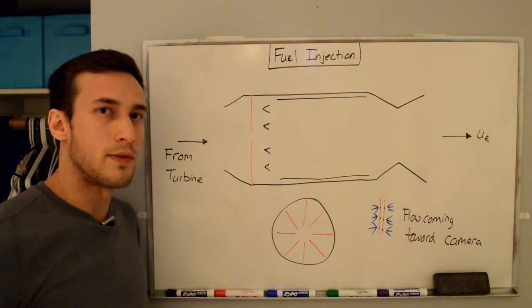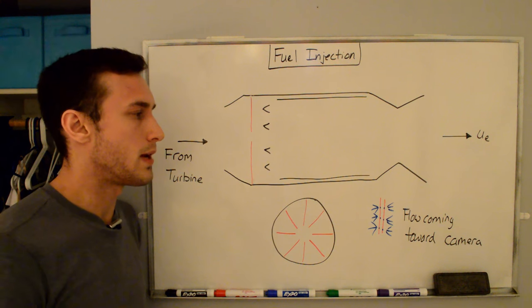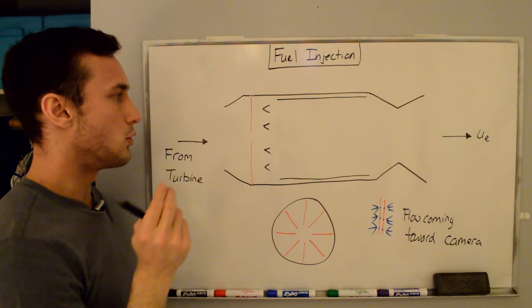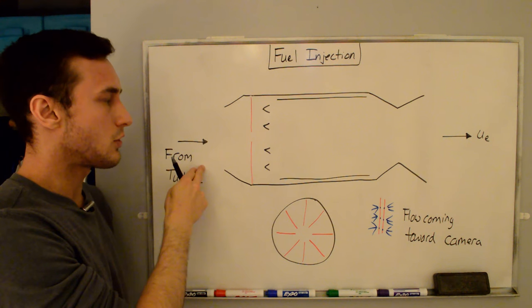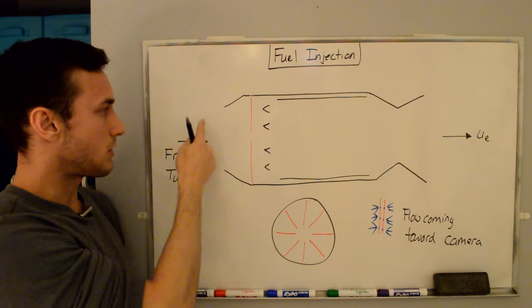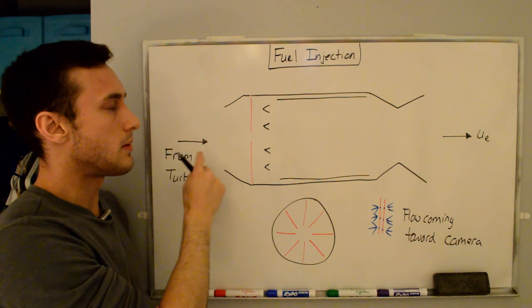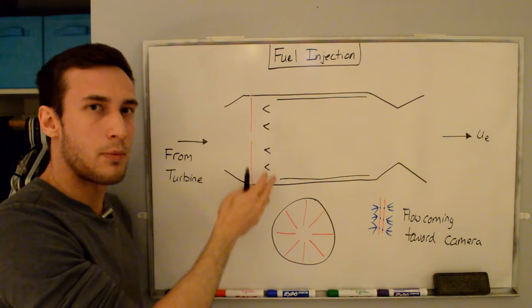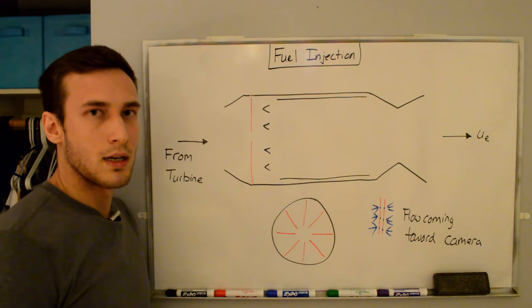To ignite the fuel, we have to evaporate the fuel droplets, so that's why we have the spray bars injecting fuel perpendicular to the gas stream because the gas stream then tears apart these droplets into smaller droplets and heat transfer from these hot gases. These are still hot gases coming from the turbine. Heat transfer from that hot gas to the fuel droplets evaporates them, and once they're evaporated, we can ignite them.